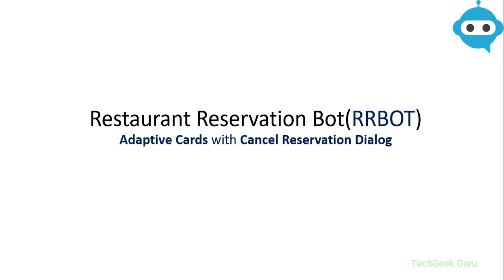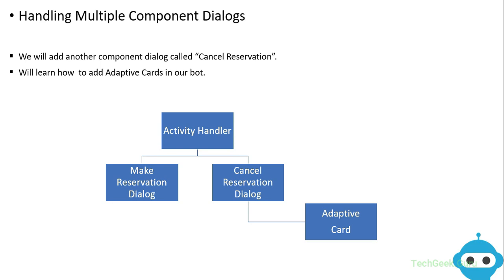In this session we are going to create another component dialogue and we will see how we can handle multiple component dialogues under one activity handler or our main dialogue. We will also learn how to add adaptive cards to our bot. There are different kinds of cards available under the bot framework, and adaptive cards are one of the most versatile cards available right now.